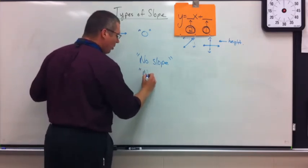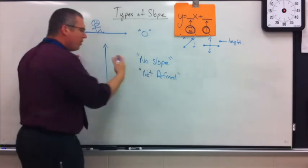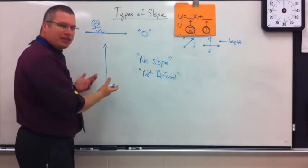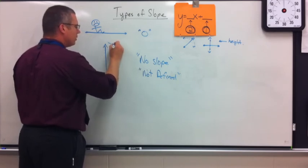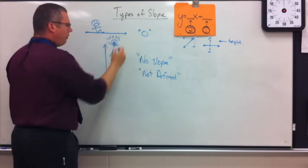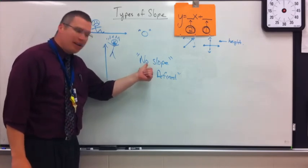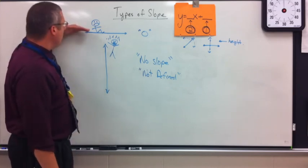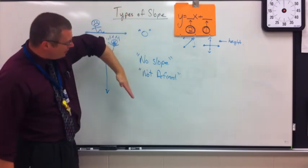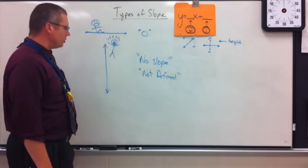Another way you might see it written is called not defined. Both of these mean this. Now, what kind of slide looks like this? This is called you falling off the side of a building. It's no fun. It is not fun at all. So this is my fourth type. Zero, positive is angled up, negative is angled down. No slope means no fun at all. Straight up and down vertical.